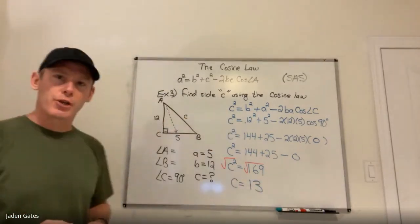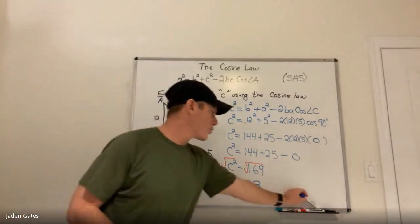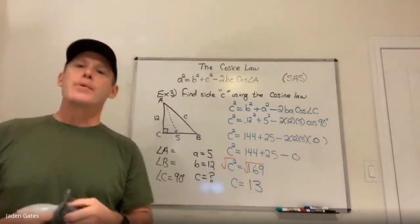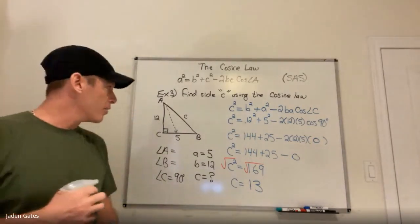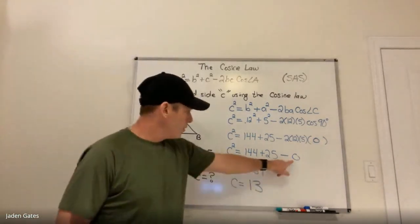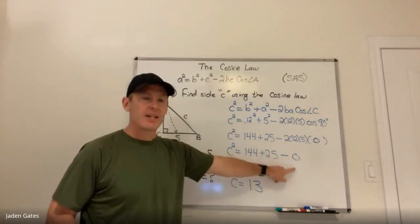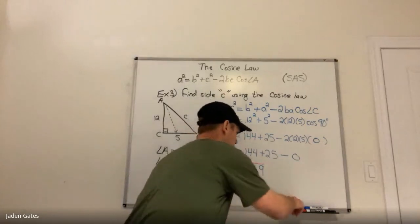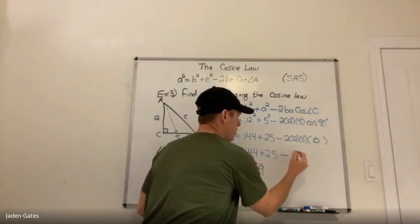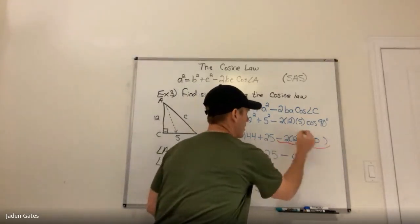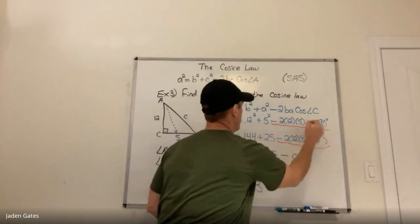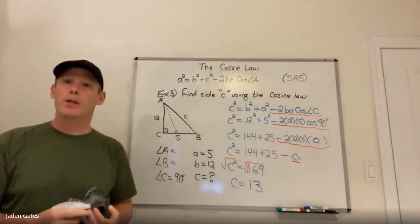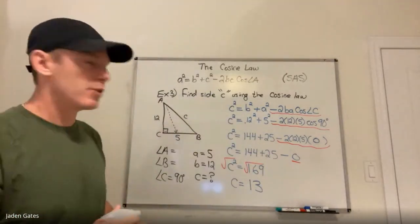We just used the cosine law to solve a right-angled triangle. Because cosine of 90° is 0, that entire term doesn't count. Look at what happens when we take away the part that doesn't count — because this was a right-angled triangle.